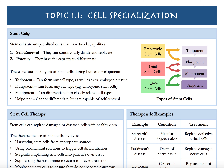For stem cells, they have two important properties. Stem cells retain the capacity to divide and to differentiate. They're able to keep dividing, producing themselves, increasing in number, and then they can differentiate into a specialized cell.